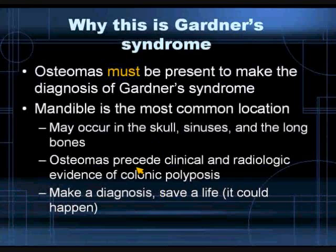This is very important — if I can give you one pearl today, this will be the one. Osteomas actually precede the clinical and radiologic evidence of colonic polyposis. To make this diagnosis, you can save a life. So Gardner's syndrome: multiple polyps within the GI tract with a 100% chance of turning malignant, and these small osteomas that will very often be evident on head and neck examinations.